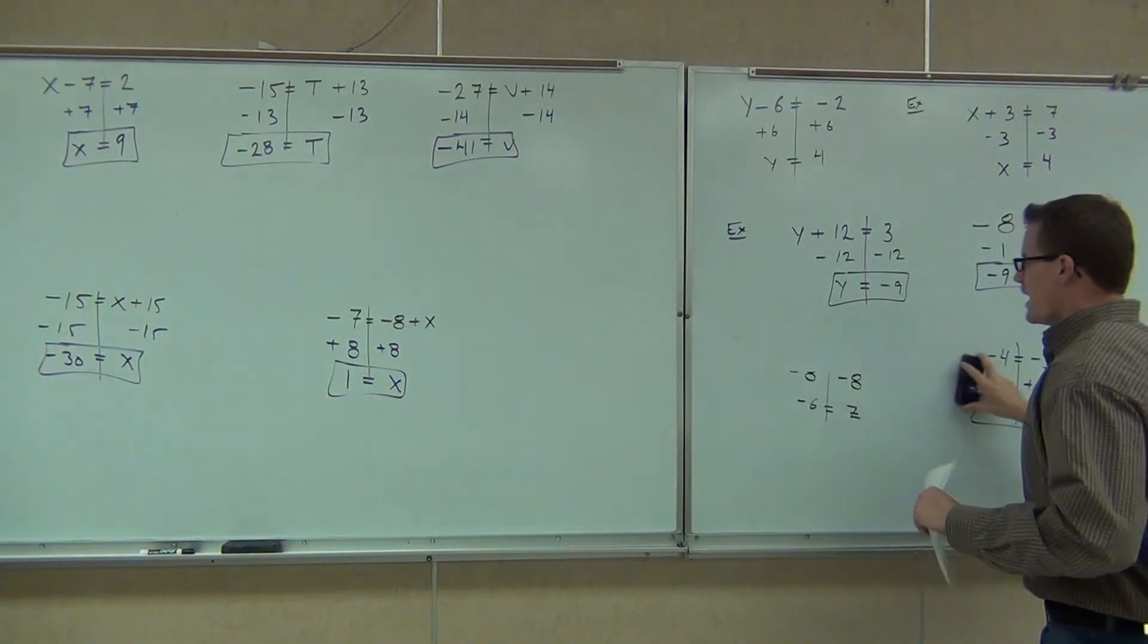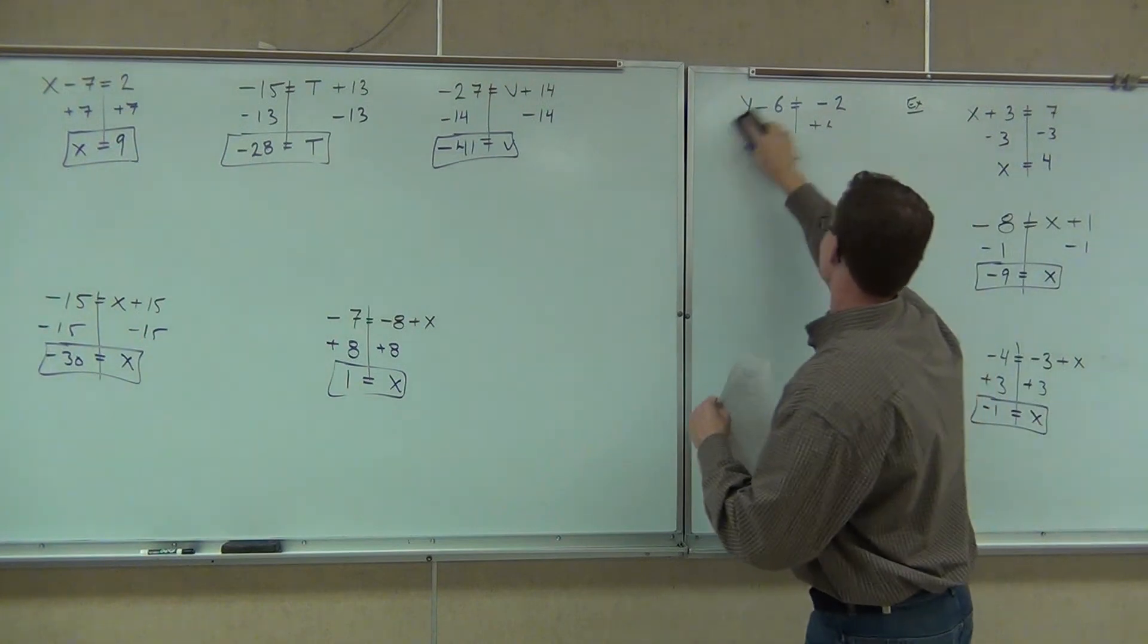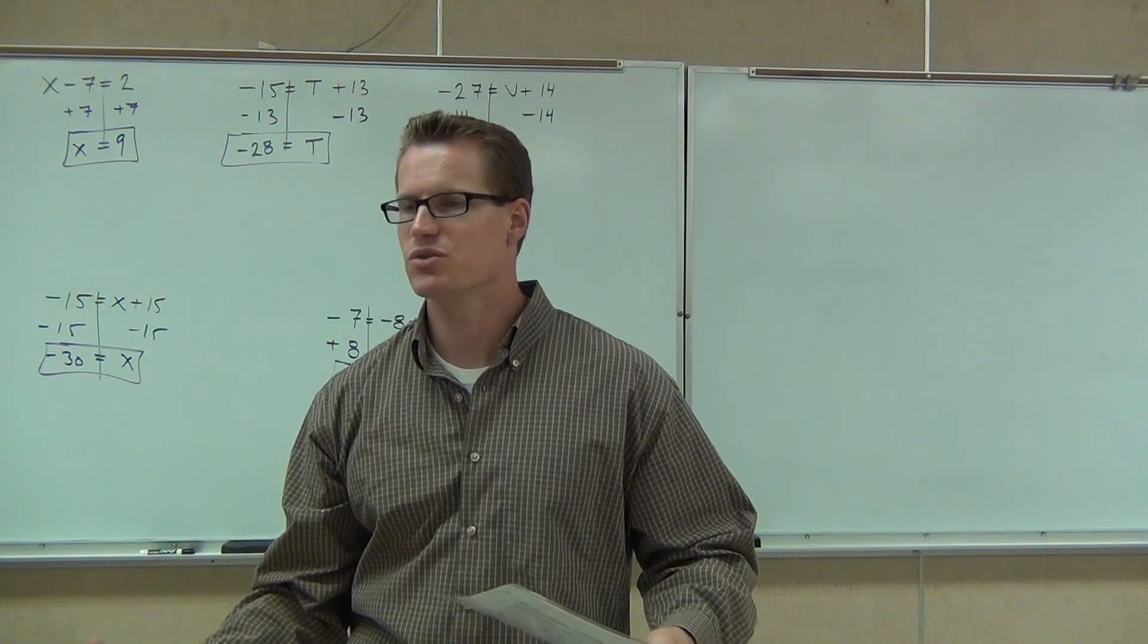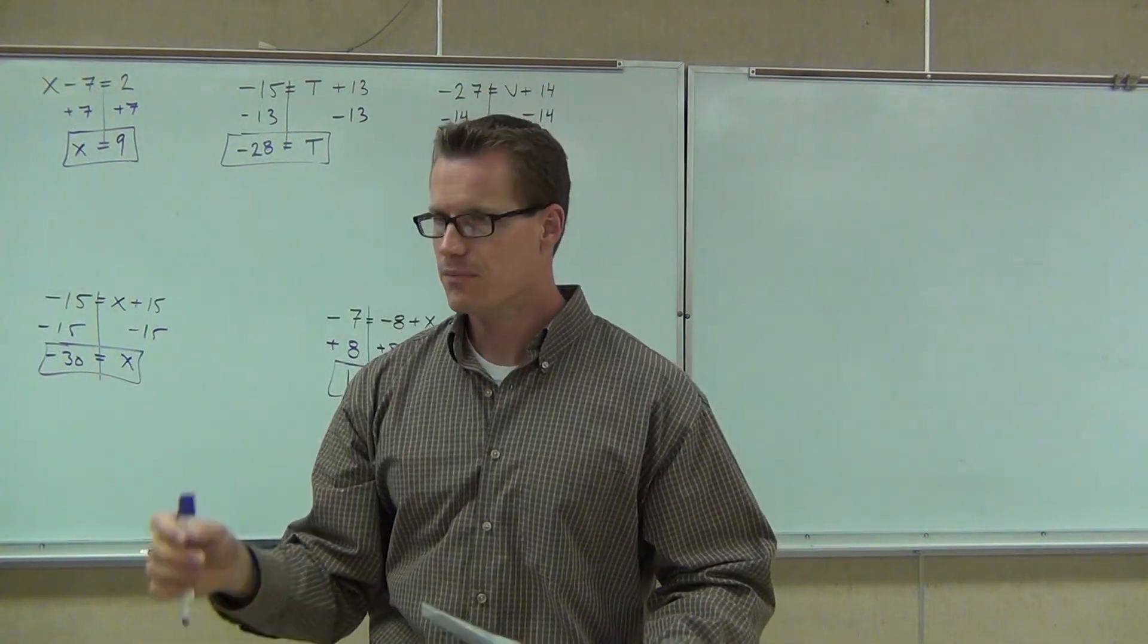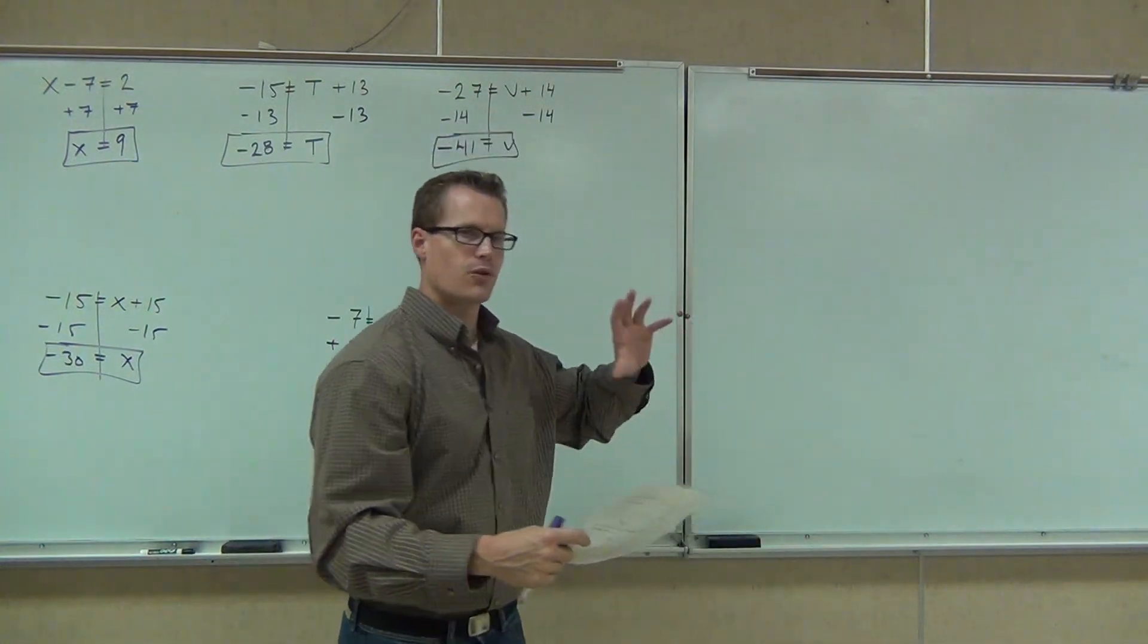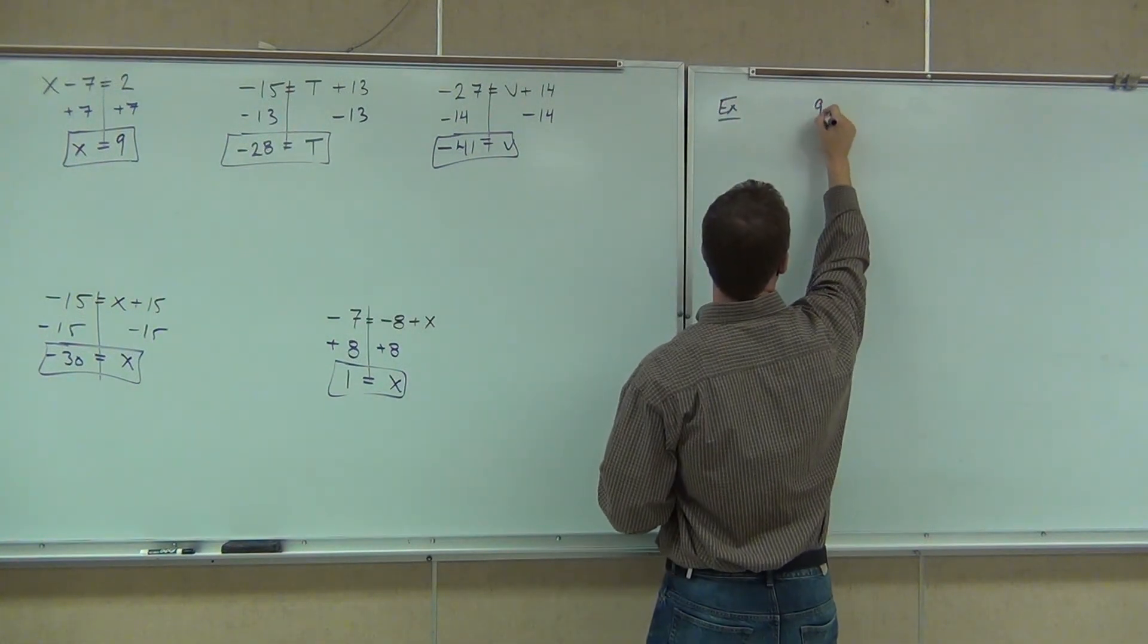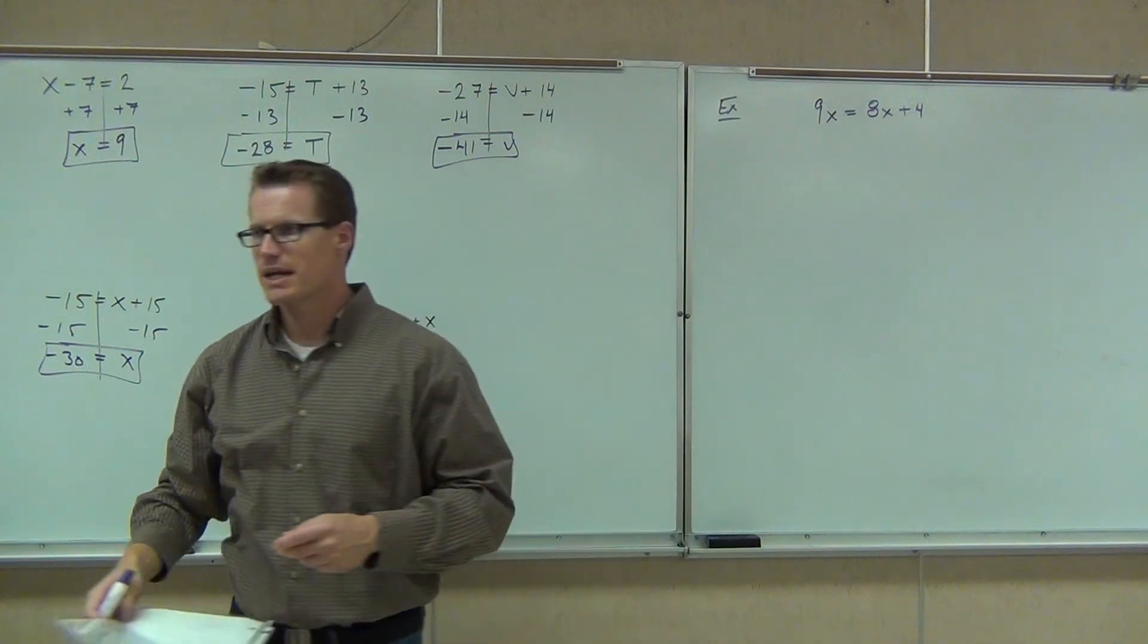Is there ever a case where you have more than one variable in the same equation? Yes. All the time. All the time. Now, I'm not talking about two different variables like x and y. Okay. You get those in later classes. That's called a system of equations. You need two equations to solve for two variables. You need three equations to solve for three variables. Four equations. You see the pattern, right? So, if you had five variables, you would need five equations to solve that. Use something called matrices to do that. It's pretty quick.